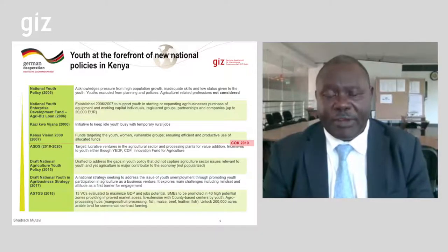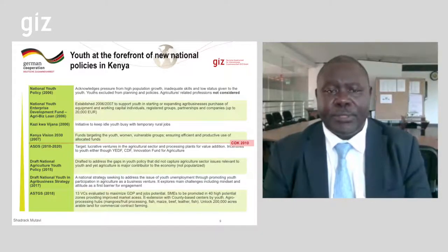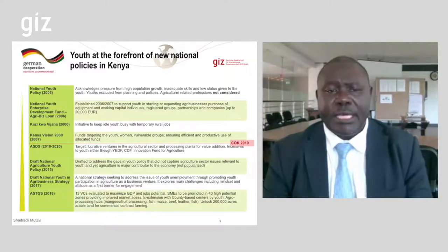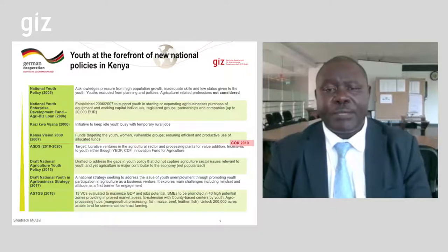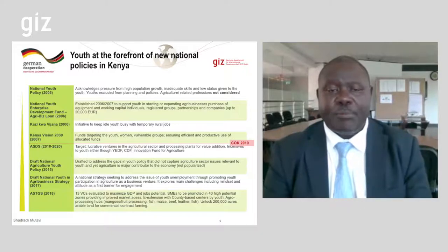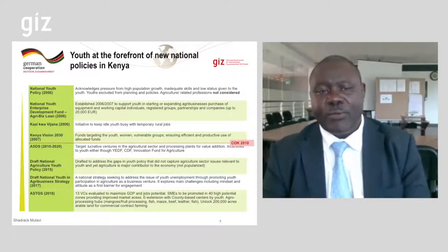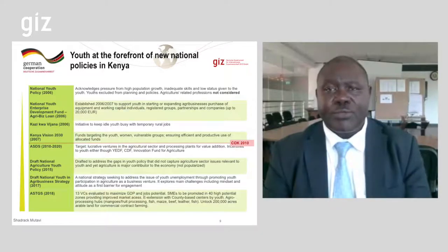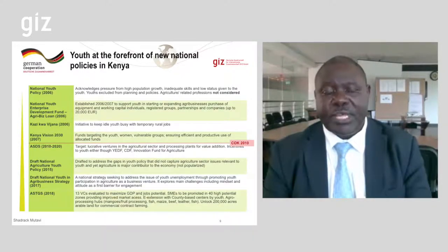Programs were developed after the youth policy was prepared. One program established immediately afterwards was the National Youth Enterprise Development Fund, established so that youth can access financing to start agribusiness projects — up to 20,000 was invested in this program. Another program started after this policy was Kazi Kwa Vijana, a Swahili phrase meaning 'work for the youth,' intended so that youth in rural areas can be engaged in activities and paid so that they have some income.